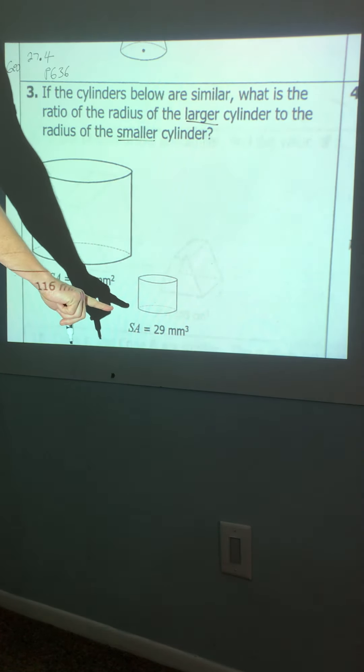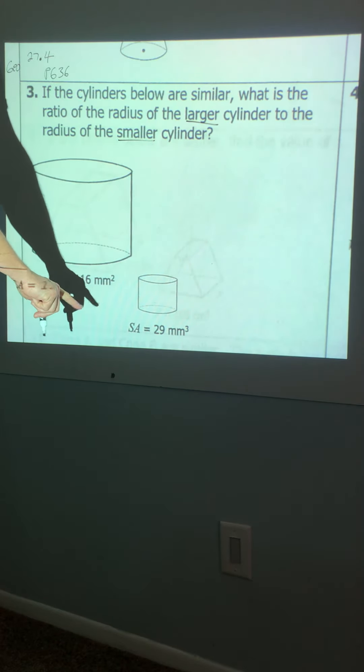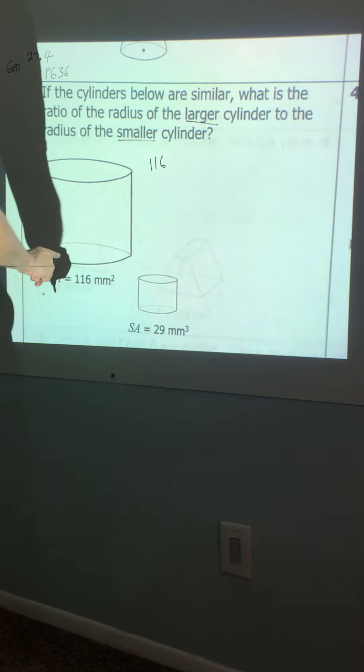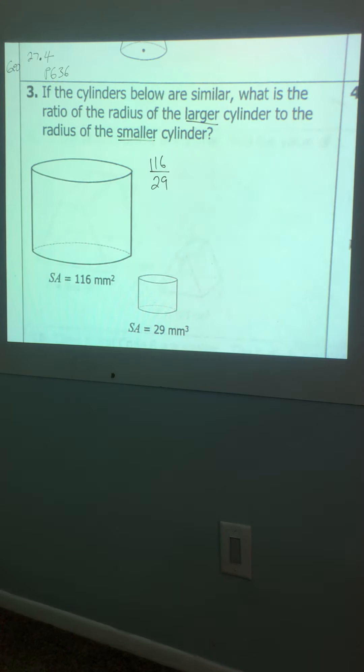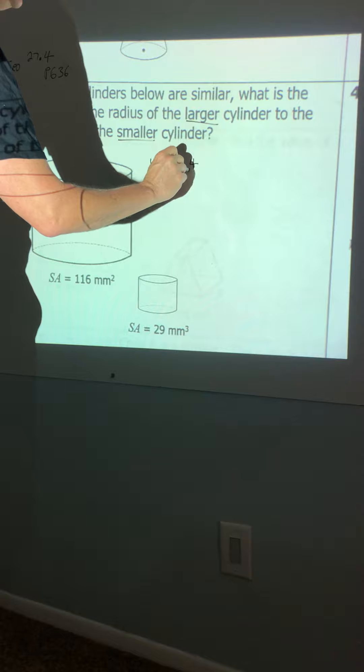So I'm going to grab the only information they gave me, which was the surface areas. I'm going to go larger over smaller. And I need to go ahead and see if I can reduce that. All right, is there anything that you can do to 116 and 29? I really thought 29 was prime. So let's try 116. You all think there's any way we can reduce that? Oh wow. What a funk. All right, if you reduce that, that's actually four to one. Isn't that crazy?